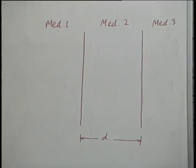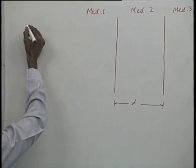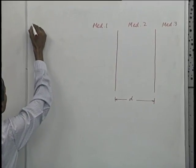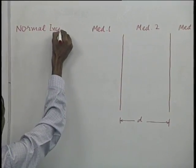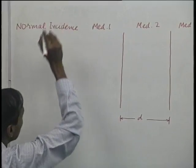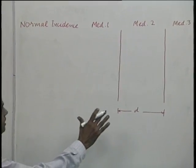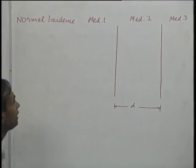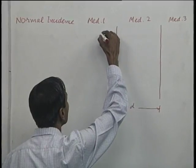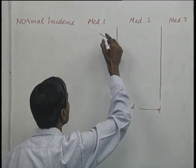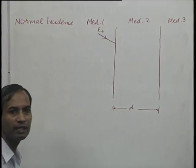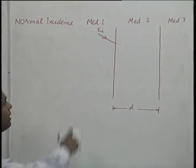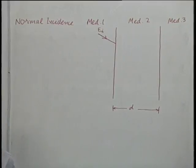We will consider the case of normal incidence; the case of oblique incidence can also be considered but is going to be more complicated. So we consider the case of normal incidence of a uniform plane wave on such a slab from medium 1. We are showing the incident wave E_i incident in a certain manner for the sake of clarity; otherwise the wave is incident at a normal angle.